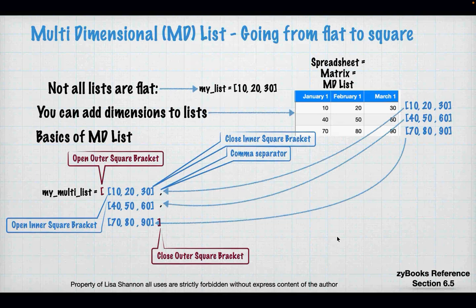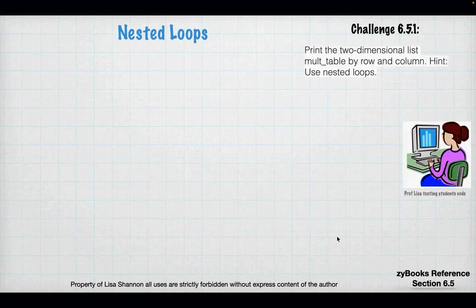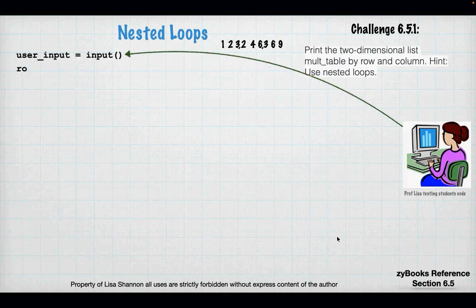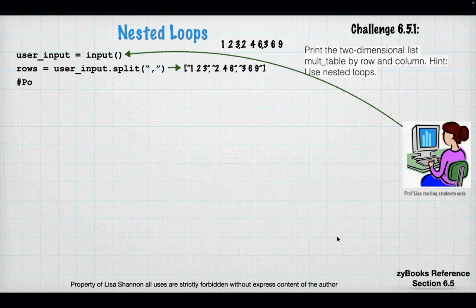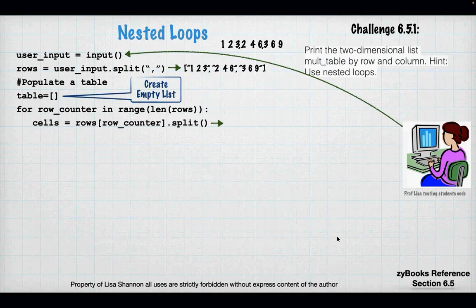You're going to have an outer list and an inner list in a two-dimensional list. The brackets have to be balanced — if they're not, you'll see a syntax error. For challenge 6.5.1, we're going to print a two-dimensional list by row and column using nested loops. For every dimension you have in a list, you want its own loop.